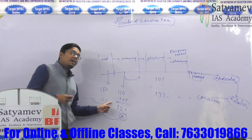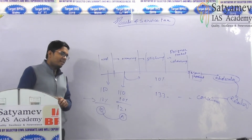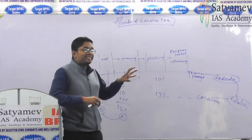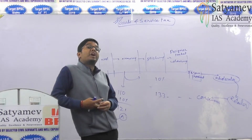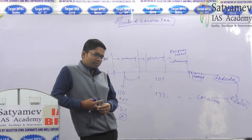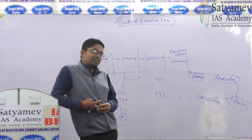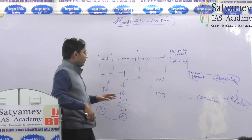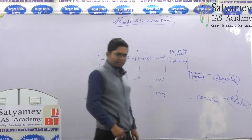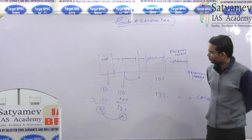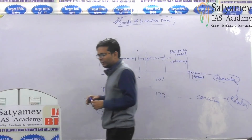The cascading effect results in inflation or increase in prices. This was the situation in the pre-VAT era, before 2004-2005. There was center tax on center tax and state tax on state tax, and this cascading effect ultimately resulted in increase in prices and inflation.